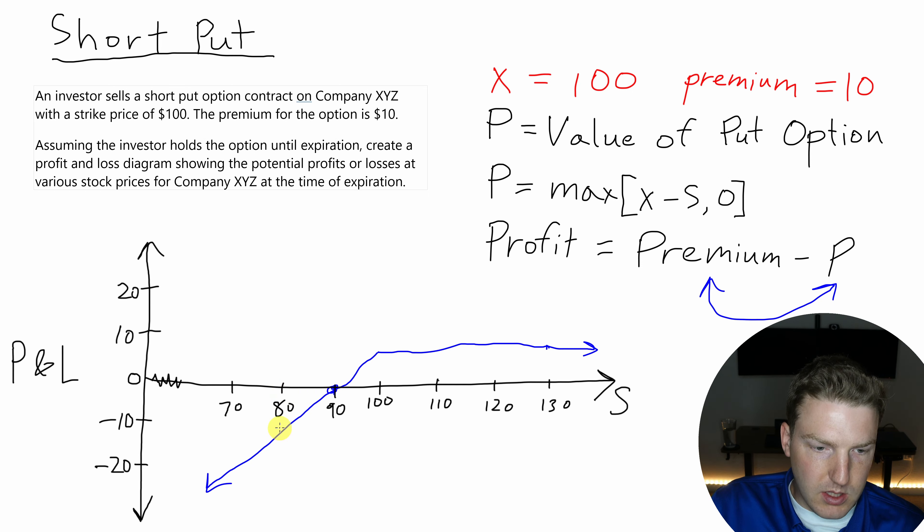And then once we get to $80, now I've lost $10. Because their value right here is $100 minus $80, which is $20. So I'm at $10 minus $20, so I'm down $10 there. And I can lose all the way up to $90 if this stock's price goes to $0.